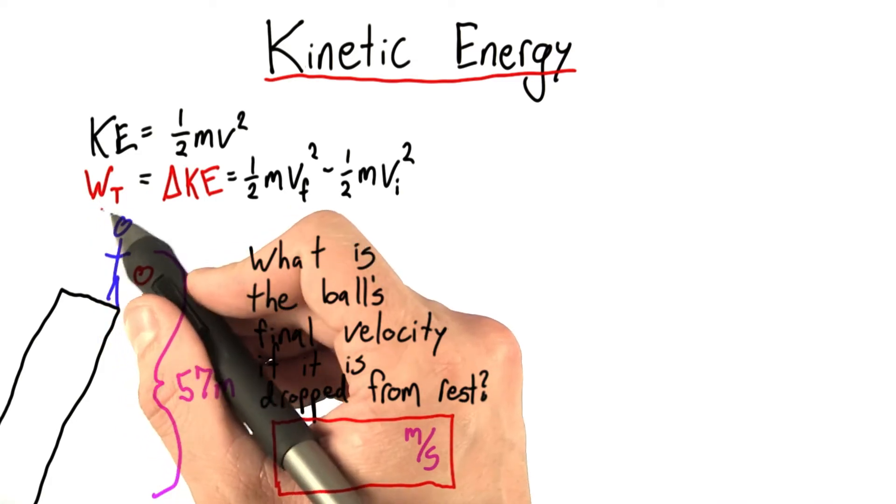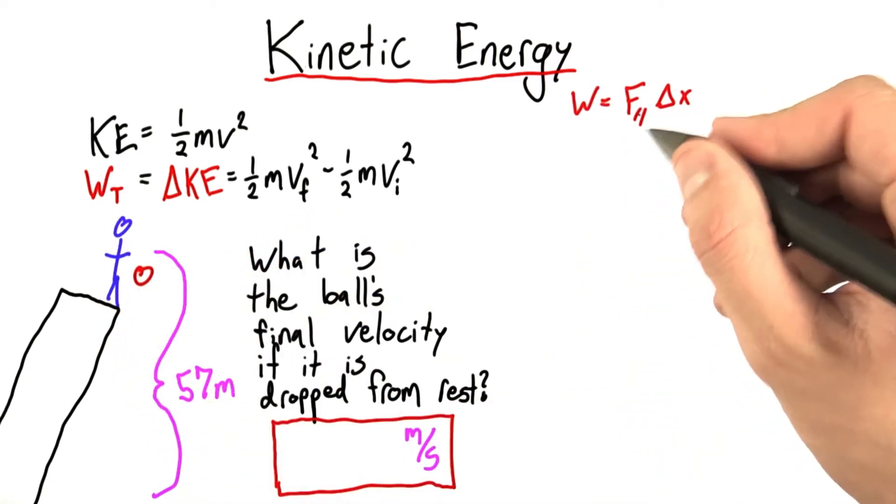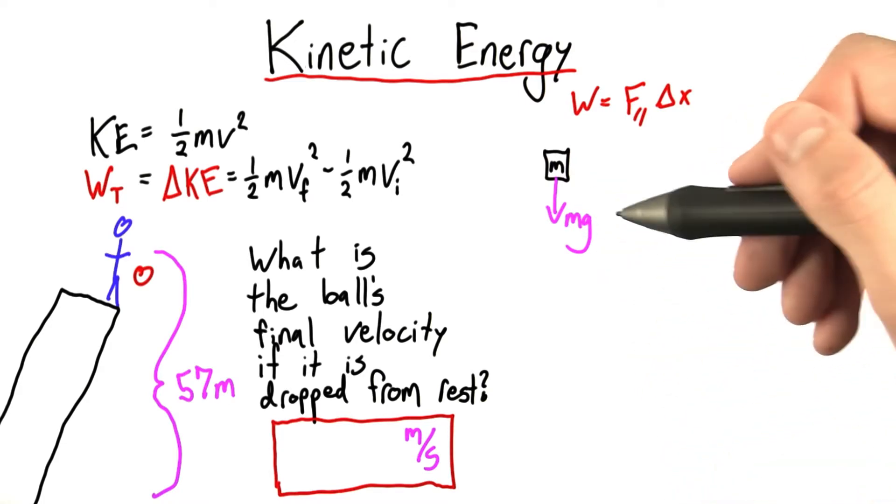For the work energy theorem, first we need the total work, and that's given by this equation. Let's take a look at the forces on the ball. This is an easy one. There's only gravity pointing downwards.